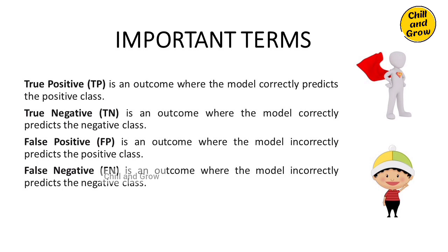I'm going to tell you a story about a magical detector. If you scan a person, it tells you whether they have a superpower. If they do have a superpower and the detector says positive — that's a True Positive: the person has a superpower and the detector is correct. True Negative: the detector says no superpower, and the detector is correct — there is a negative result, but it is true.